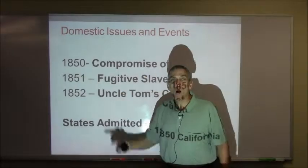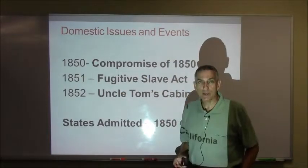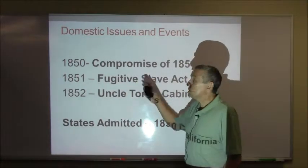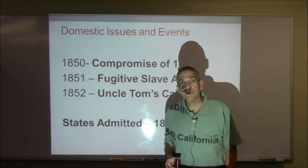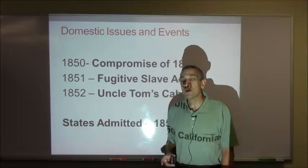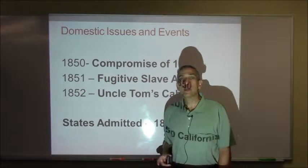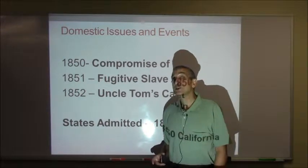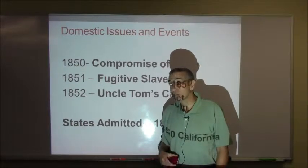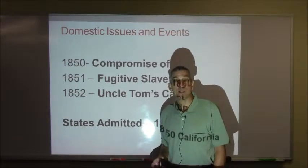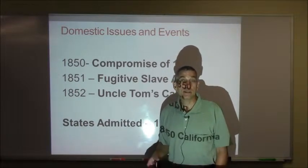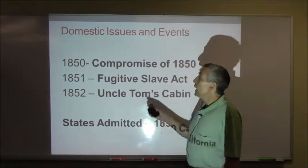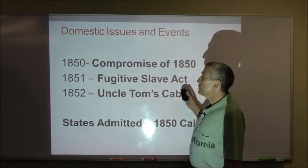Domestic issues and events: we have the Compromise of 1850 and the Fugitive Slave Act. California enters the Union as a free state, and we get a very tough fugitive slave law that allows bounty hunters to track down runaway slaves anyplace in the United States. So basically we've expanded slavery throughout the entire contiguous United States. That's the Fugitive Slave Act in 1851.